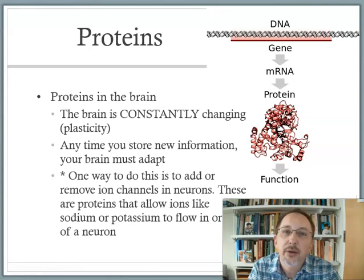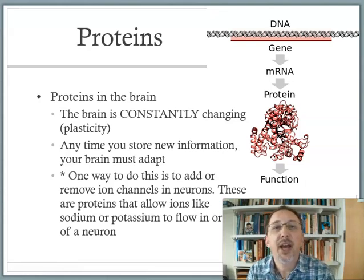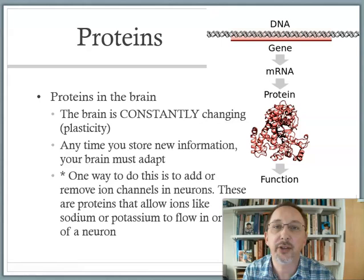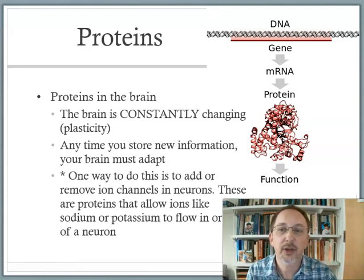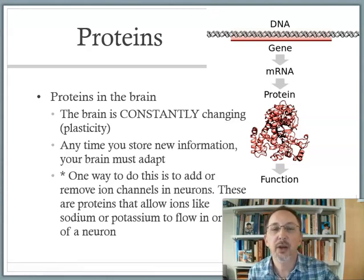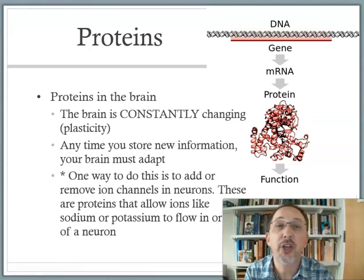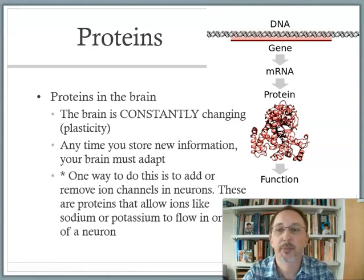You stick a protein channel into a neuron, you change the function of the neuron, and now we're storing information. The brain is changing — this is called plasticity. Plasticity means the brain is adaptable throughout your entire life. There's a lot of evidence that says learning things is good for you; the harder it is to learn things, the better it is for you cognitively as you age. There are protein channels, which are ion channels — ions like sodium and potassium moving in and out of the neuron all the time. You add a channel, you take a channel away, you change the flow, you change how fast the neuron can fire, and you change the information that gets sent.